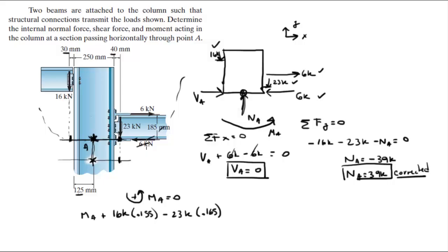And the 6k creates a moment of minus 6k times 0.185 meters, and all of that is equal to zero.